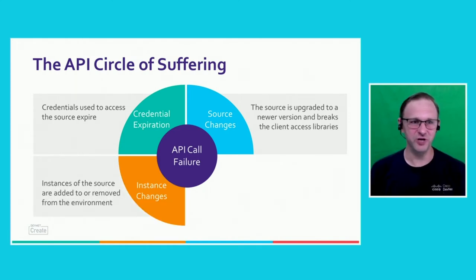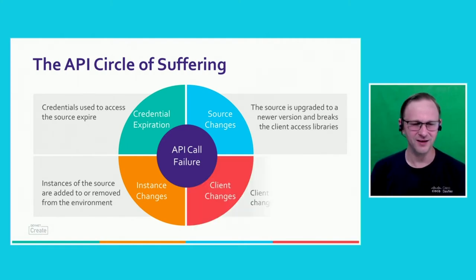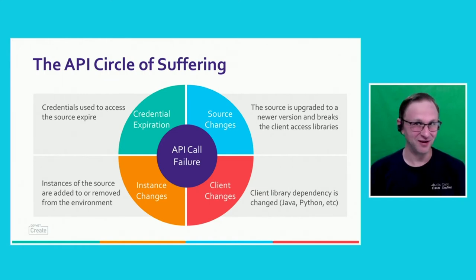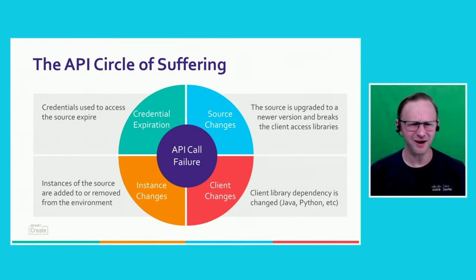Instance changes: we put in a new instance, maybe we replaced an old one with a new one and forgot to include that in our integration scripts for pulling inventories. And finally, my personal favorite on this one is client changes. Has your Java version ever changed? Maybe you upgraded it as a requirement for a new process and it broke one of your old scripts. It happens. We can't always avoid these problems, but we can try our best to mitigate them.